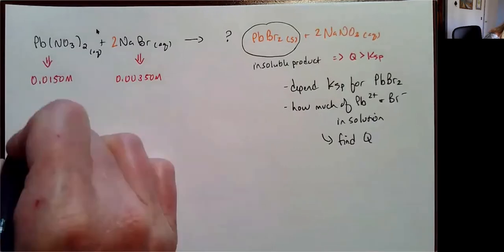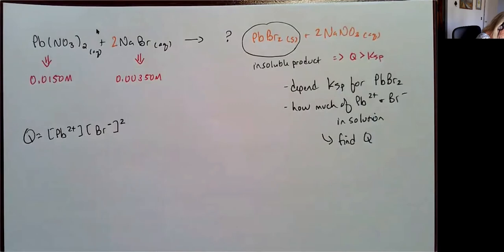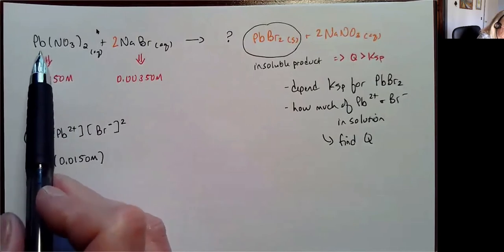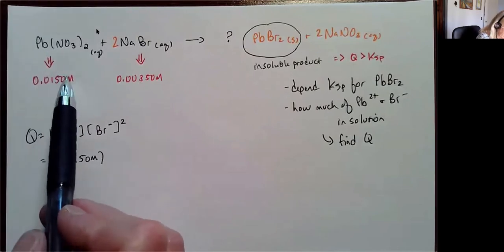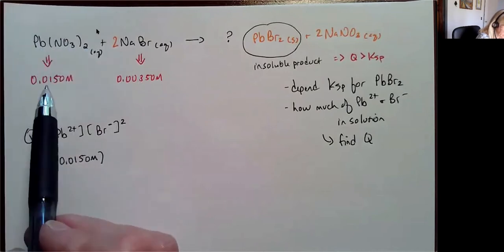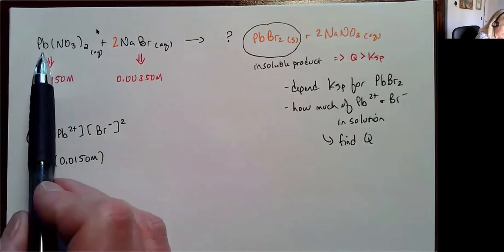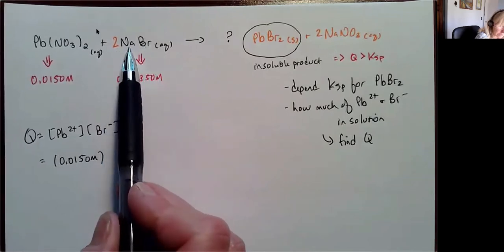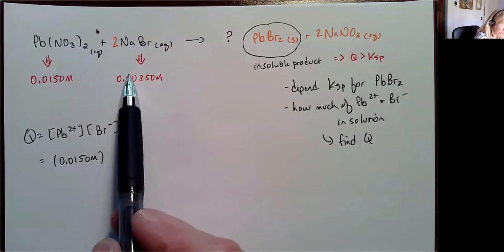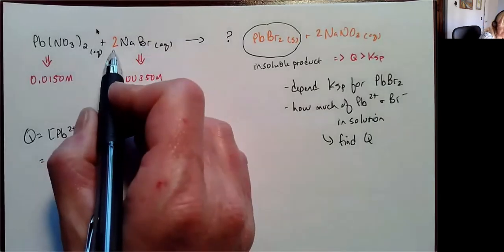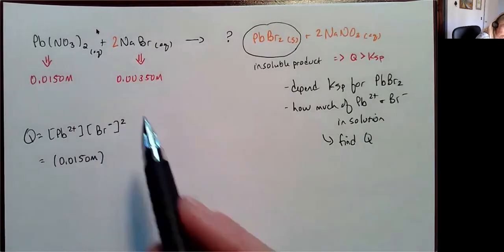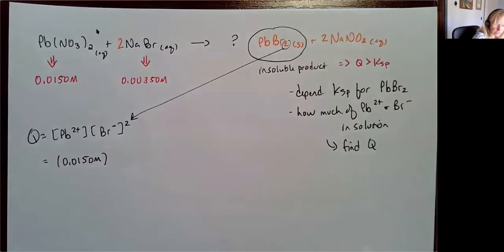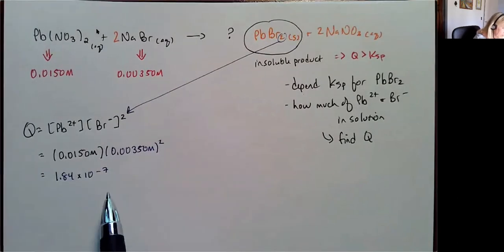Only if Q is greater than Ksp am I going to see that precipitate. So I'm going to set up Q first. Q looks an awful lot like K for my insoluble product, and I'm going to plug these values in. For every formula unit that dissociates, I'm going to have one lead ion. So my molarity of lead nitrate equals the molarity of lead ions. My molarity of sodium bromide gives me the concentration of bromide ion. I'm going to apply the stoichiometry from my product — that gives me the exponent of 2 — and I get a value of 10⁻⁷.